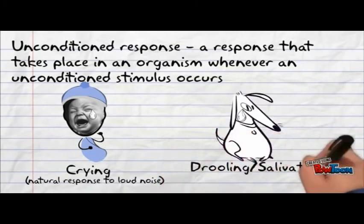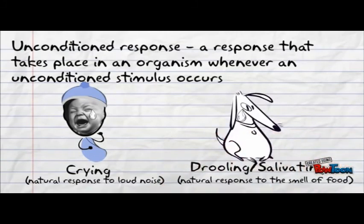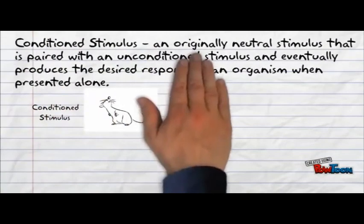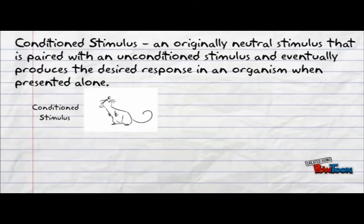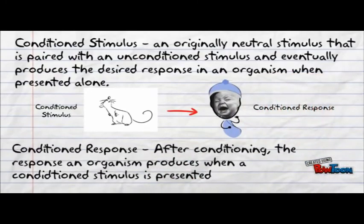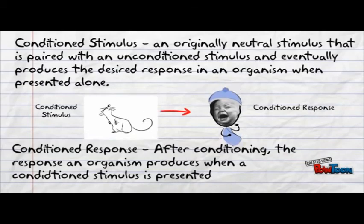Crying or screaming is a baby's natural response to loud noises, just as drooling is a natural response for dogs that smell good food. Once Little Albert began to associate the neutral rat with the negative loud noise, the rat became the conditioned stimulus — the previously neutral object that now elicits a response. In Pavlov's experiment, this was the bell that eventually made the dogs drool. That makes Little Albert's fear of rats the conditioned response — even though he wasn't afraid of rats at first, he eventually learned by associating rats with loud noises that upset him.